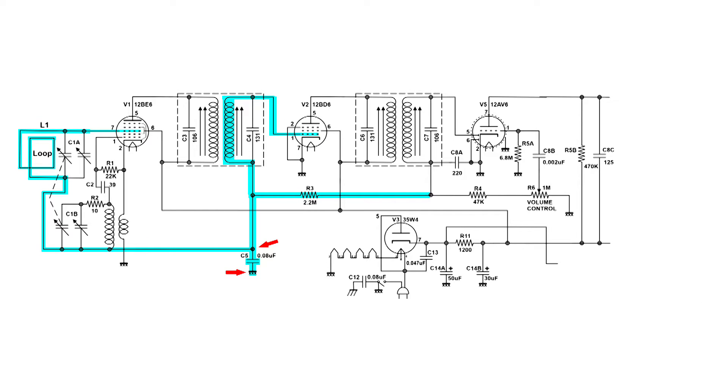This is the circuit I'm going to use, the radio circuit. And the AVC is this blue line. And you can see that it goes up to a couple of grids, one in the first tube and one in the second tube. And the way this works is the stronger the station, the more negative the voltage.